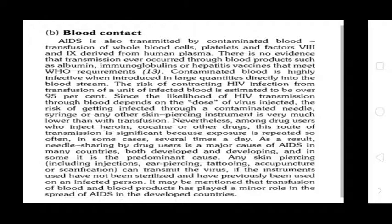Blood contact: AIDS is also transmitted by contaminated blood transfusion of whole blood or blood cells. There is no evidence that transmission occurs through blood products such as albumin, immunoglobulin, or hepatitis vaccine that meet standard requirements. Contaminated blood is highly infective when introduced in large quantities directly into the bloodstream — the risk of acquiring HIV from a unit of infected blood is estimated to be over 95%. The risk of getting infected from a contaminated needle, syringe, or skin-piercing instrument is lower than from transfusion, but among drug users, transmission is significant because exposure is repeated, sometimes several times a day. Needle-sharing by drug users is therefore a major cause of AIDS in many countries.